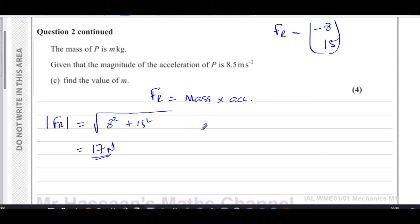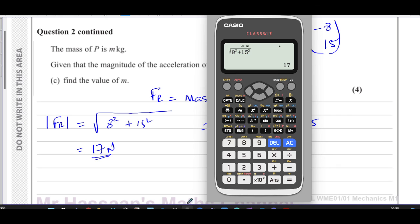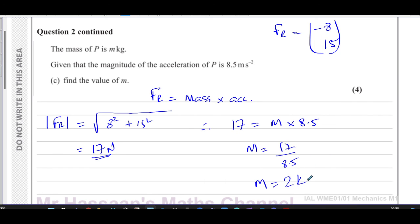Therefore, we can say that the resultant force, its magnitude is 17 equals the mass, which is m times acceleration, which is 8.5. So the mass is going to be 17 divided by 8.5. That gives us 2. 2 kilograms. So basically, m equals 2. And there's the answer for the question part C. And that concludes this question.